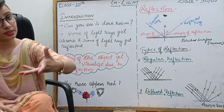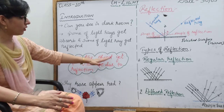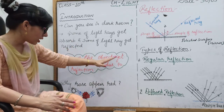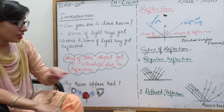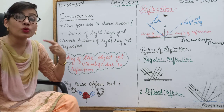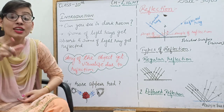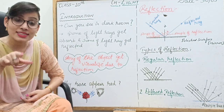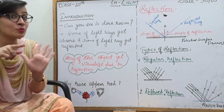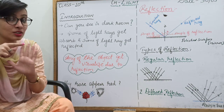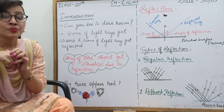For example, this appears red to you. When light rays fall on it, some rays are absorbed and some are reflected. White light has seven constituent colors — VIBGYOR: Violet, Indigo, Blue, Green, Yellow, Orange, Red.